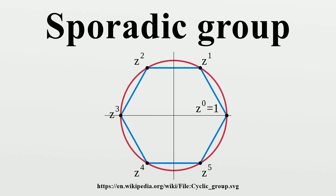Five of the sporadic groups were discovered by Mathieu in the 1860s and the other 21 were found between 1965 and 1975. Several of these groups were predicted to exist before they were constructed. Most of the groups are named after the mathematician who first predicted their existence.